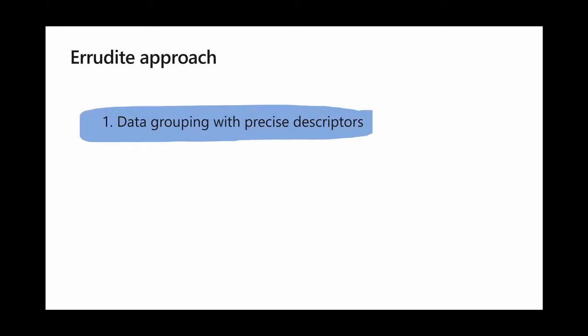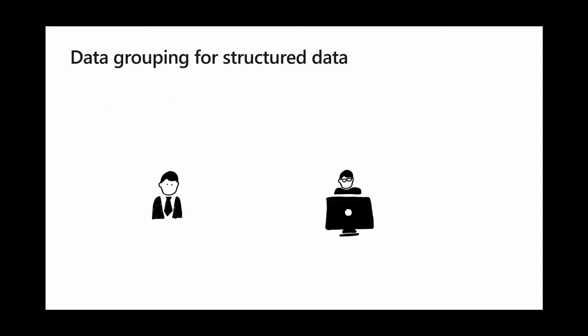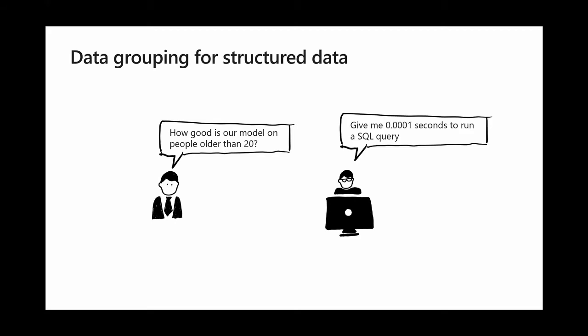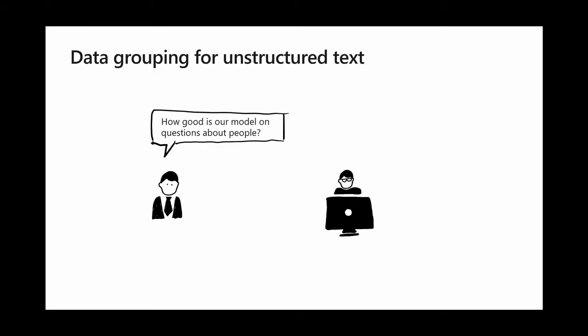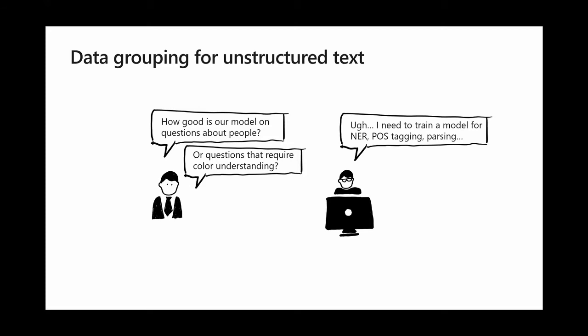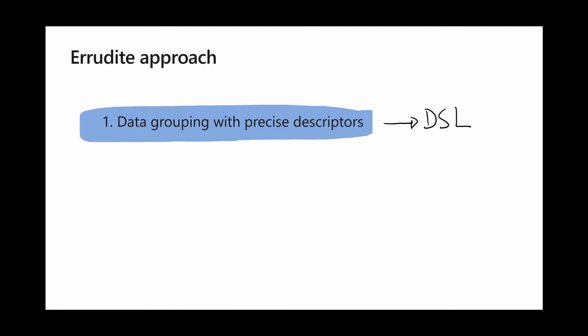We propose an approach and tool called Erudite. In a nutshell, we're saying let's do two things. One, let's group the data with precise descriptors — use code rather than subjective labels. For structured data, like a model predicting income, you can just run a SQL query. For NLP, it's not that easy. If you ask how good is our model on questions about people, or questions requiring color understanding, you need a parser, NER, maybe even train a model. So it's harder to write these descriptors, but we develop a DSL to help people do it.